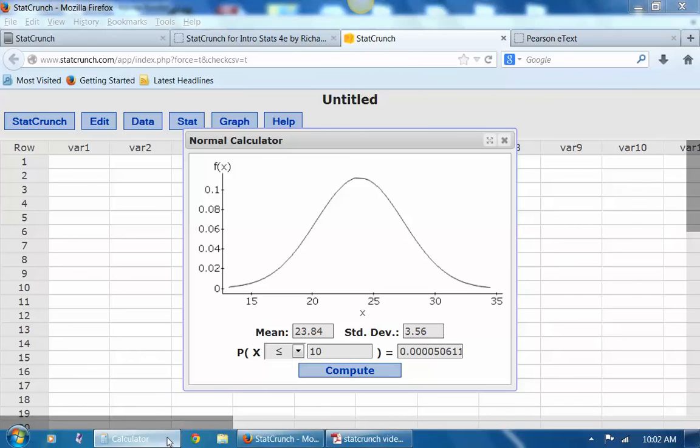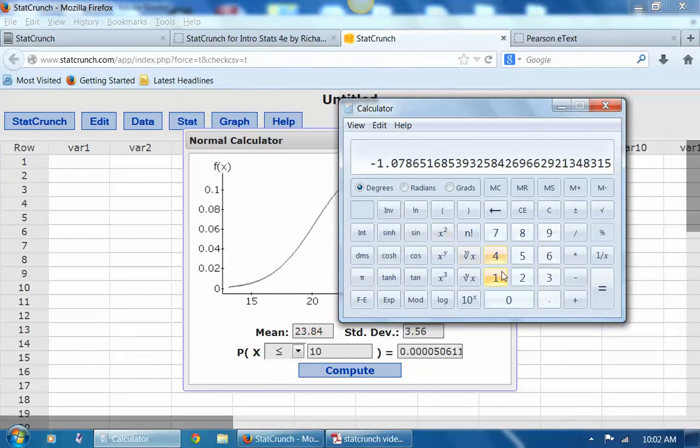And likewise, we can go ahead and find the z-score. So let's find the z-score for 10. 10 minus 23.56 divided by 3.56. So that car is 3.81 standard deviations below the mean.